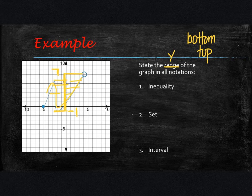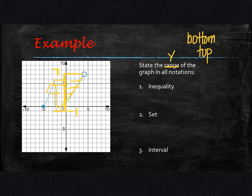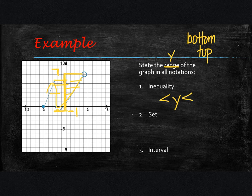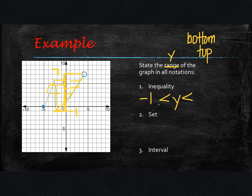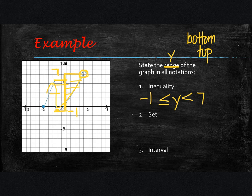Let's write the inequality. It is a between statement because we have a bottom and a top boundary. Since we're talking about range, we put less than y less than. The bottom is a solid point at negative 1 — since it is a solid point, I put a line under the less than symbol, making it less than or equal to. At the top we have an open circle at 7, so that's just the less than symbol, and we put 7 after it.